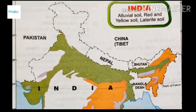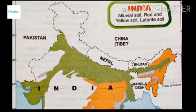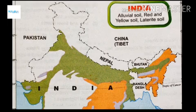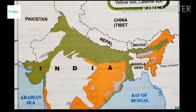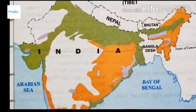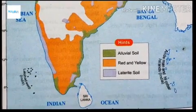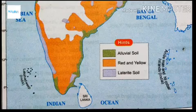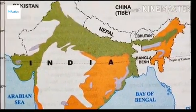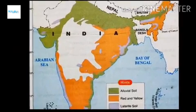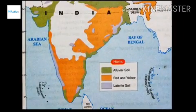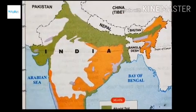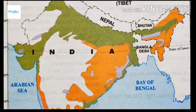Now the first geography map — we will talk about alluvial soil, red and yellow soil, and laterite soil. Alluvial soil is one of the most fertile soils, found near the Ganga-Brahmaputra basin. In the northeastern states — West Bengal, Assam, and Gujarat — you can see it. In the southern region, a little part of Kerala and the coastal areas of Tamil Nadu, Andhra Pradesh, and Odisha also have alluvial soil. Red and yellow soil is clearly visible in Bihar, Jharkhand, and Chhattisgarh.